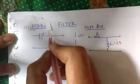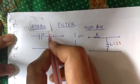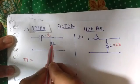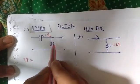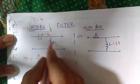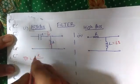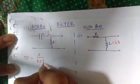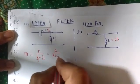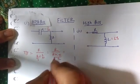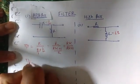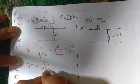So for the high pass filter with a capacitor, the transfer function is output impedance upon total impedance. The output has resistor R, and these two components are in series, so total impedance is R plus 1/SC. Taking LCM, that becomes RSC plus 1 divided by SC. So the transfer function is RSC upon RSC plus 1.